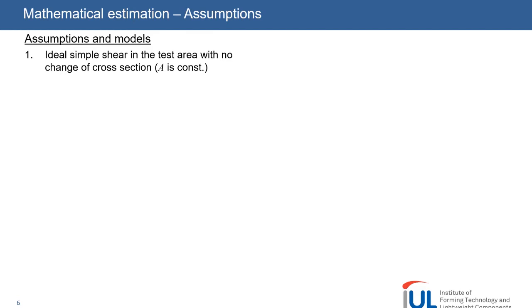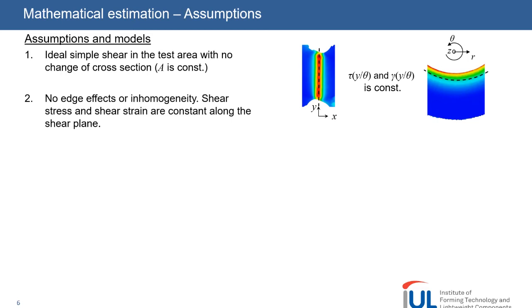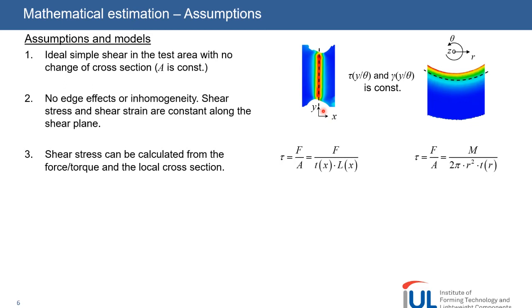We made a few assumptions and chose proper but simple material models to handle our analytical model. The first assumption is that there is ideal simple shear in the test area with no change of the cross-section A. The second assumption is that there are no edge effects or inhomogeneity, so shear stress and shear strain are constant along the shear plane. The third assumption is that the shear stress can be calculated from the torque and the force and the local cross-section.